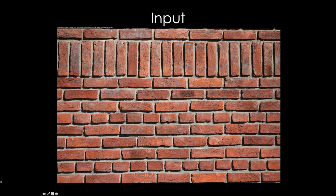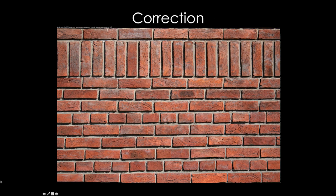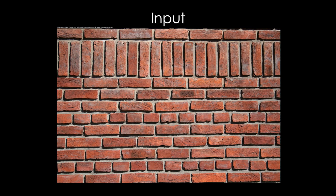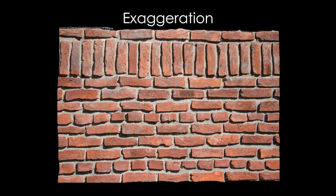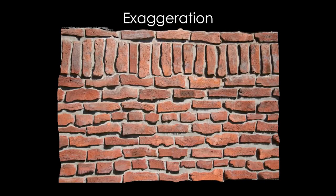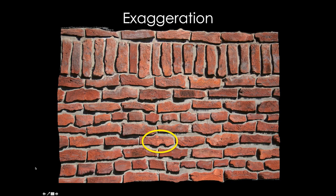In this example of an image of a brick wall, our method can reduce the variations of the bricks and align them into rows. In the exaggerated image, the bumps in the bricks are revealed, as well as their misalignment in rows.